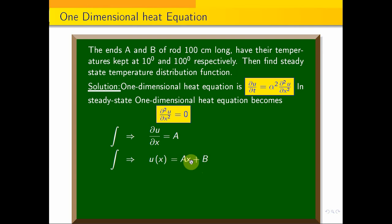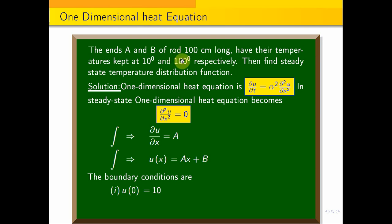Now the boundary conditions are: the starting temperature u(0) = 10 degrees at the first end point, and the second boundary condition u(100) = 100 degrees at the other end point, since the rod length is 100 centimeters.